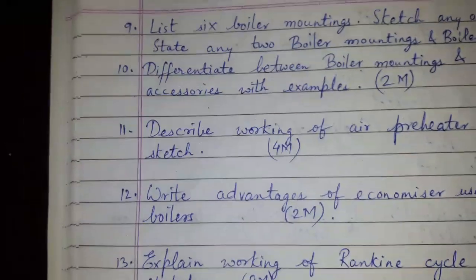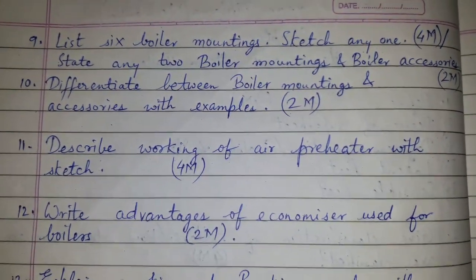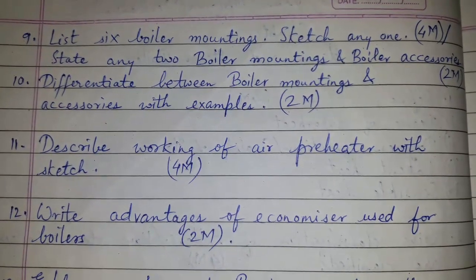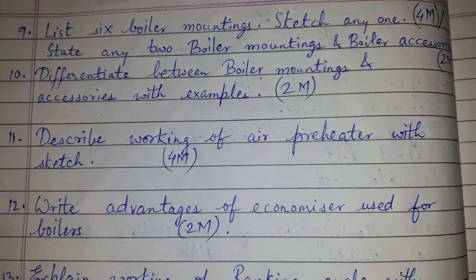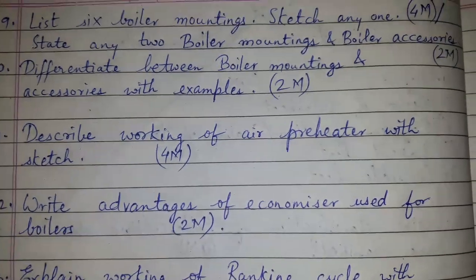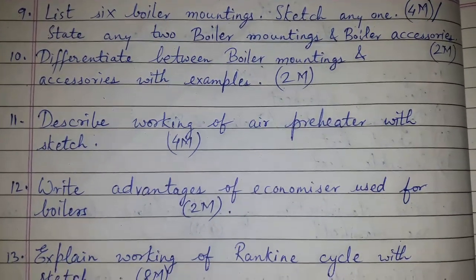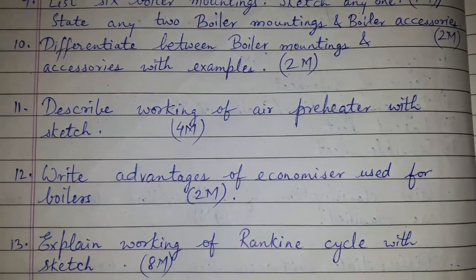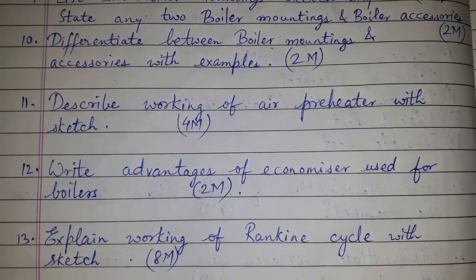Question 9: List 6 boiler mountings and sketch any one for 4 marks. Alternatively, it can be asked: state any 2 boiler mountings and boiler accessories for 2 marks. Or: differentiate between boiler mountings and accessories with examples for 2 marks.